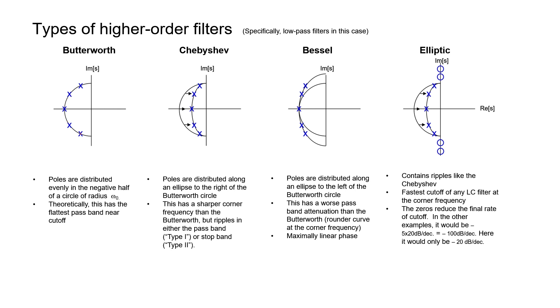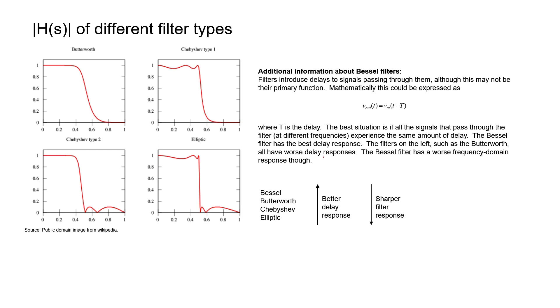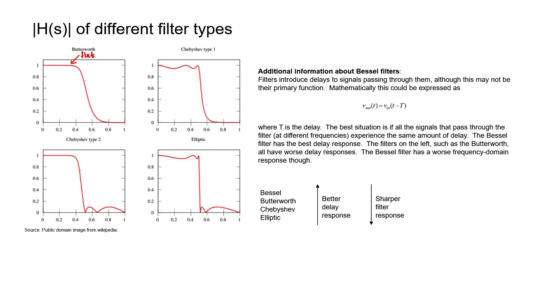In a Butterworth filter, the poles are arranged evenly around the left half-plane. In a Chebyshev filter, they're arranged around an ellipse, as they are in a Bessel filter as well. Looking at frequency response plots on a linear scale: the Butterworth filter has a very flat response near the corner frequency. In fact, it gives the maximally flat response near the corner frequency. If you're trying to design a well-behaved filter that's very flat in the passband and bends down in a nice way, design a Butterworth filter.